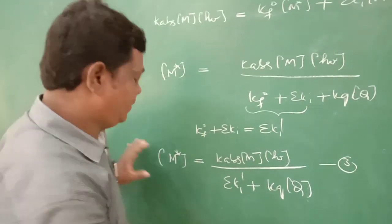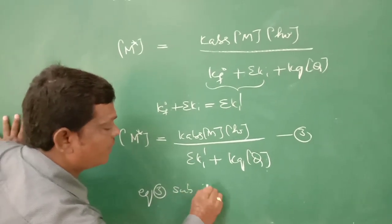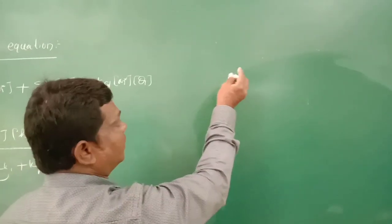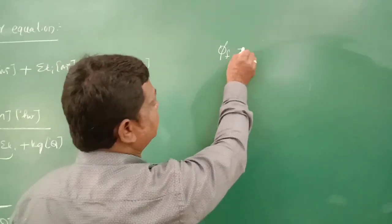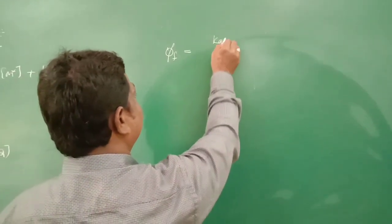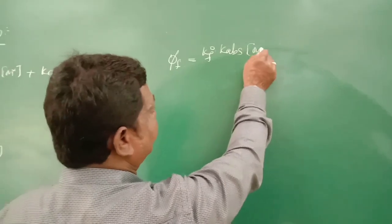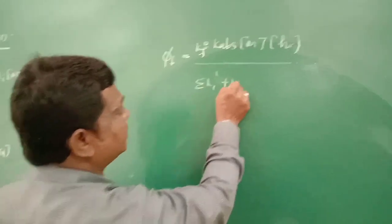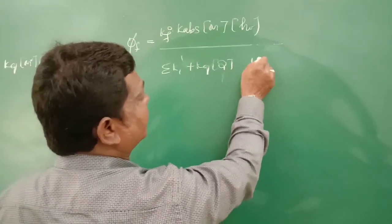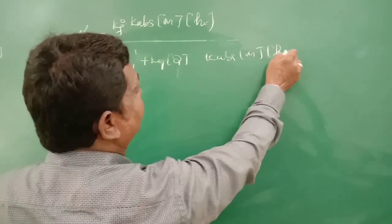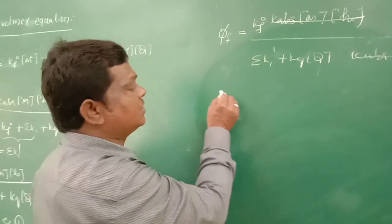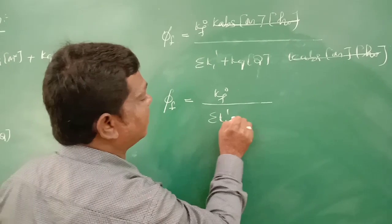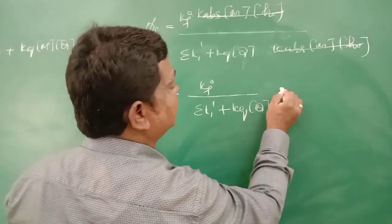Substituting equation 3 into equation 1, the quantum yield for fluorescence becomes: φF = K₀F × [K_ABS × [M] × I(hν) / (ΣKᵢ′ + KQ × [Q])] / (K_ABS × [M] × I(hν)). The K_ABS terms cancel, giving φF = K₀F / (ΣKᵢ′ + KQ × [Q]). This is equation 4.